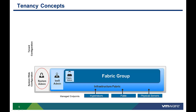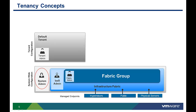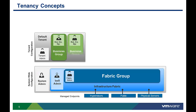As part of the initial installation and configuration process, the system admin configures the default tenant's properties. The tenant admin can further subdivide their group into one or more smaller organizational groups called business groups. Business groups provide further isolation of resources, policies, and services. However, more sharing is allowed across business groups than across tenants.